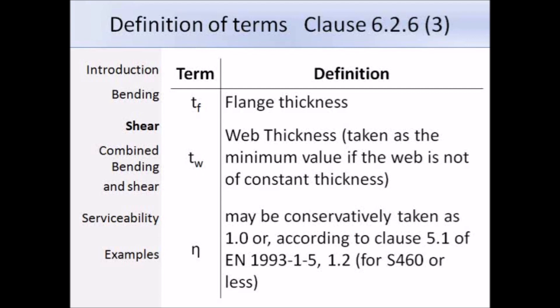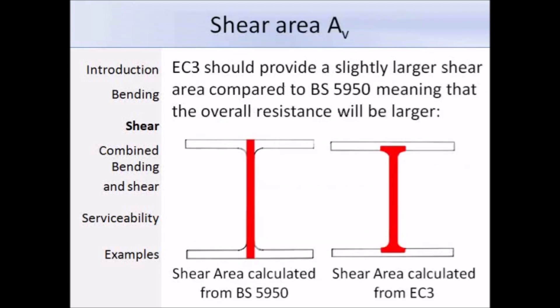These two diagrams show clearly the difference in the shear areas calculated using BS5950 and EUR3. The area worked out using EUR3 will be slightly larger, and this is an advantage because the larger the shear area, then the larger the shear resistance will be.